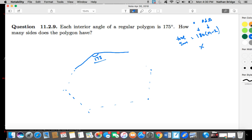What else do we know about the angle measurements of a polygon? The other thing we know is that the exterior angle measurements add up, they sum to 360.